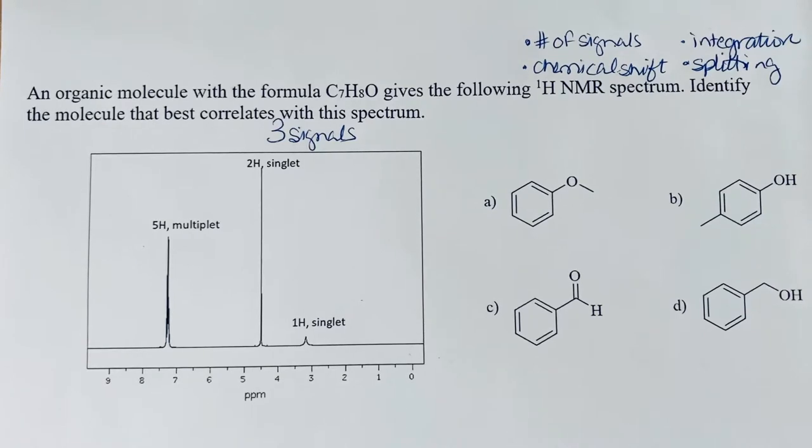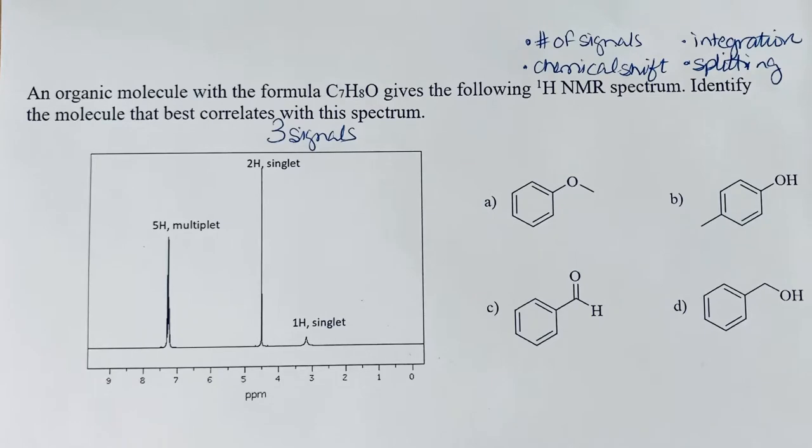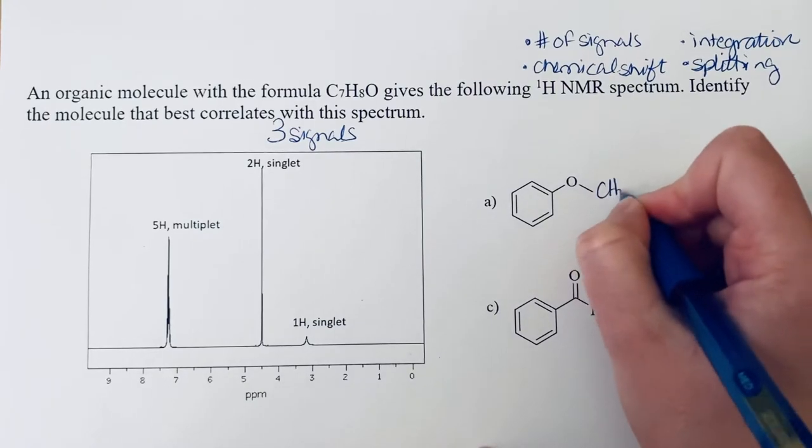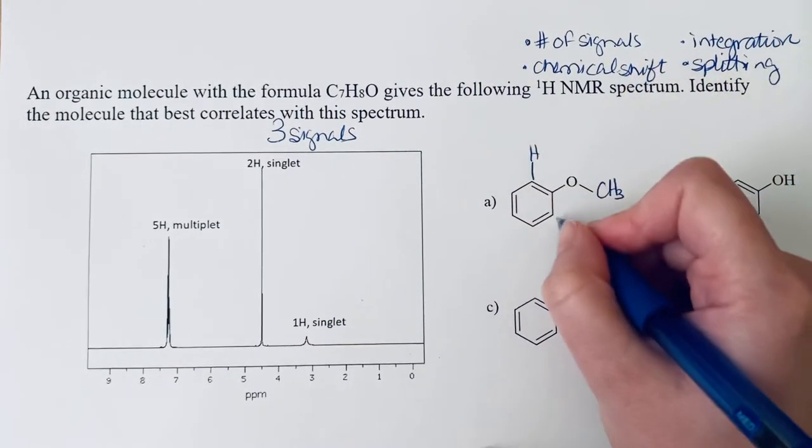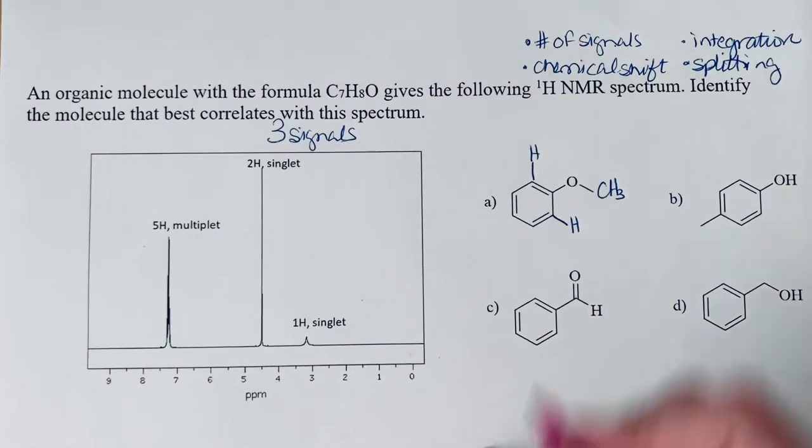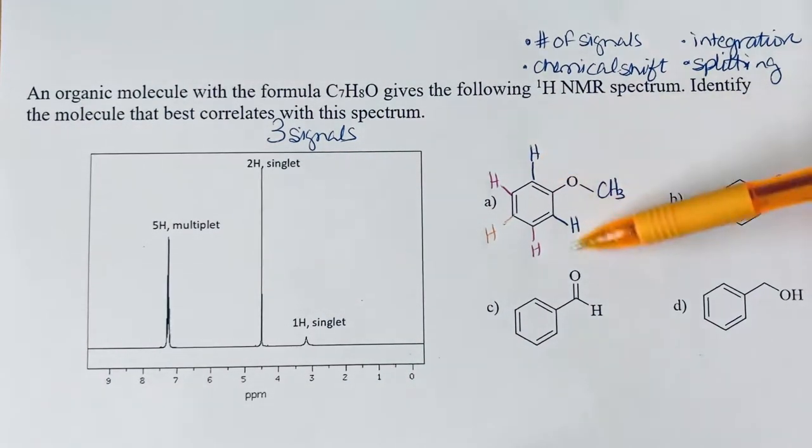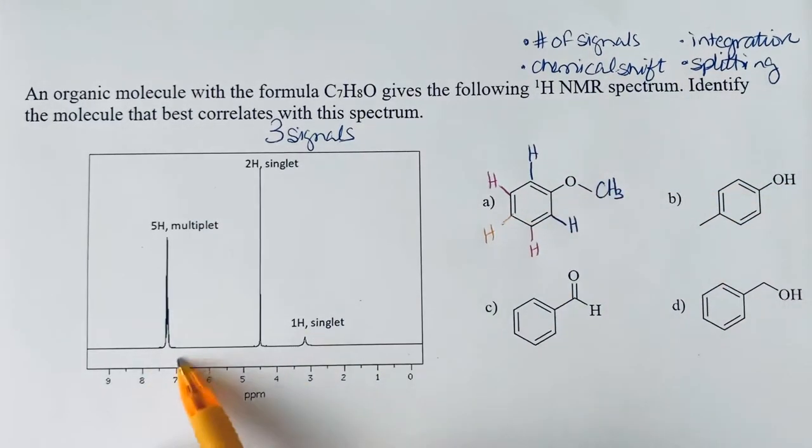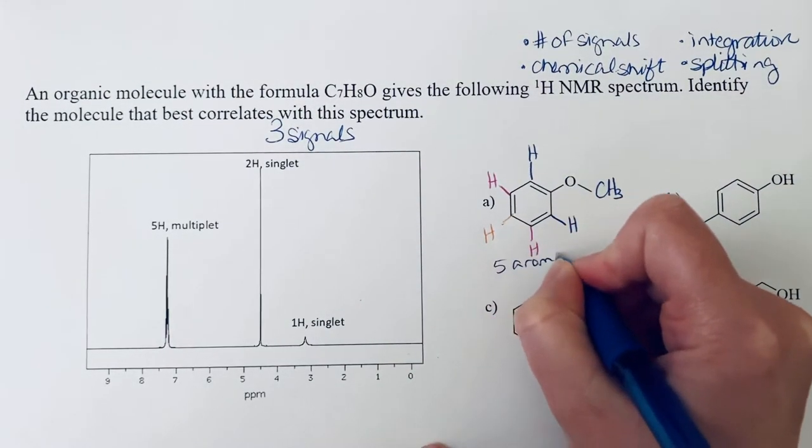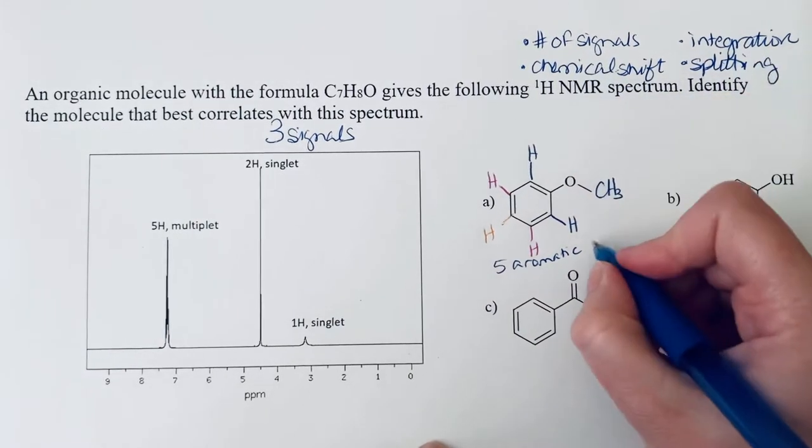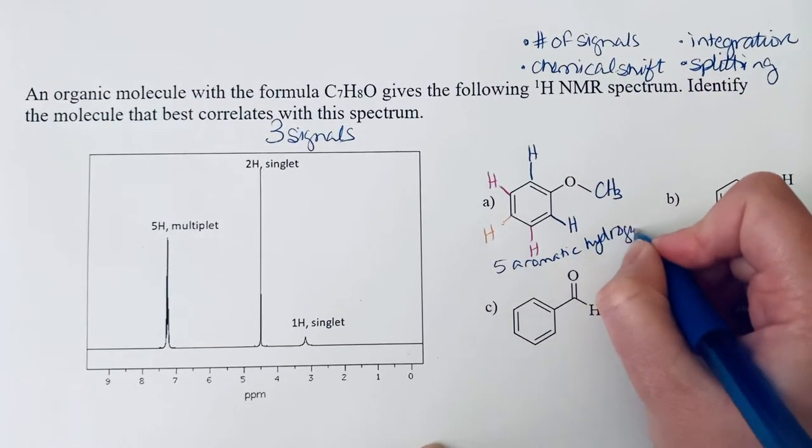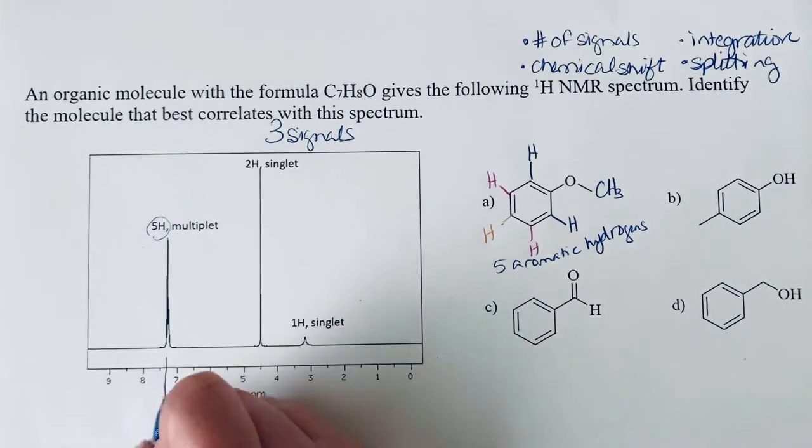I would notice that these all have benzene rings. So here in A, we've got a CH3 and these two hydrogens that would be the same as each other, these two hydrogens, and this one hydrogen. So I would expect to probably see these one, two, three different signals in the aromatic region. Definitely you have five aromatic hydrogens, so that's that integration piece. And we do see that there are indeed five hydrogens in the aromatic region.